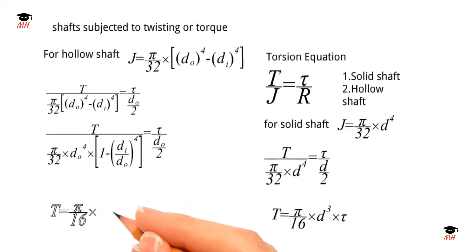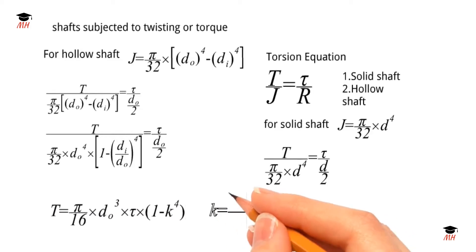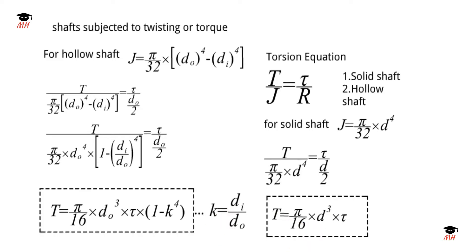...we get the final expression: T = π/16 × do³ × τ × (1 - k⁴), where k = di/do, the ratio of inside diameter to outside diameter.